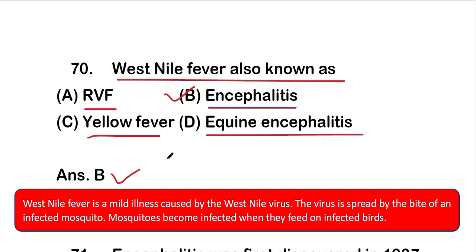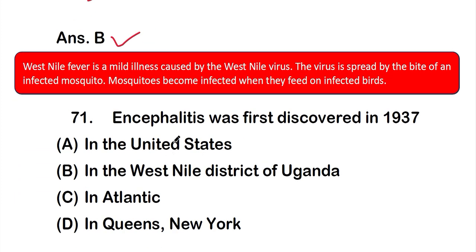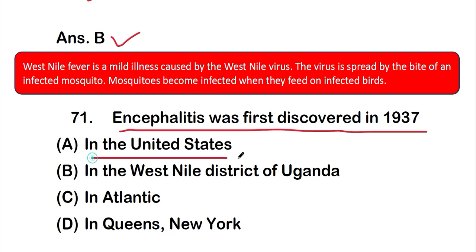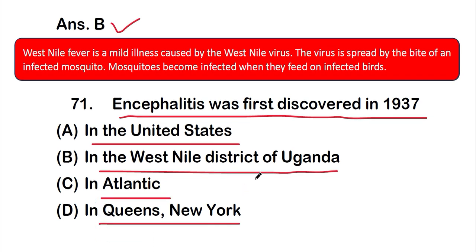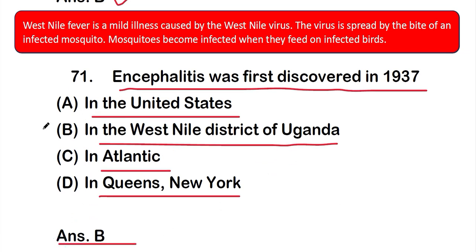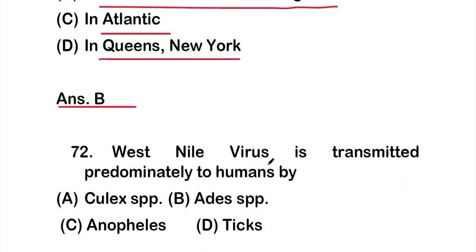Question number 71: West Nile encephalitis was first discovered in 1937 in — option A: United States, option B: West Nile district of Uganda, option C: Atlantic, or option D: Queens, New York. The correct answer is option B — it was first discovered in 1937 in the West Nile district of Uganda, which is why it is called West Nile fever.